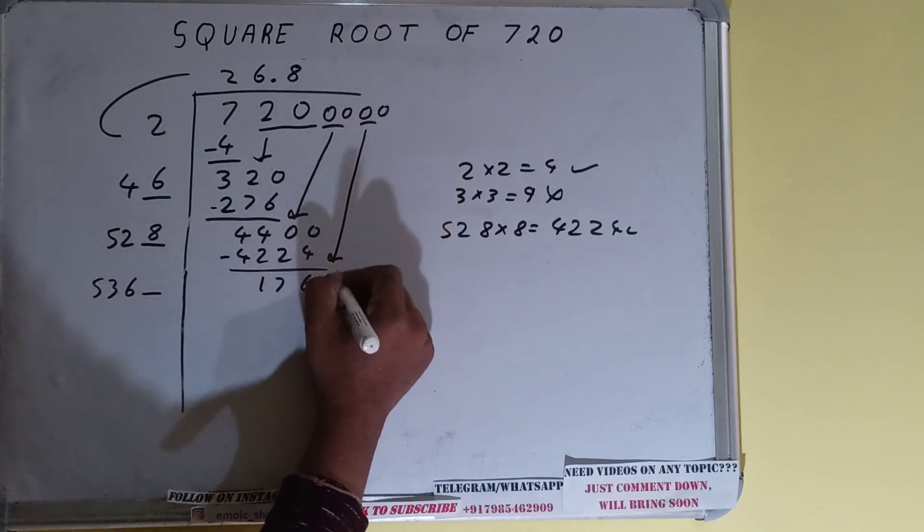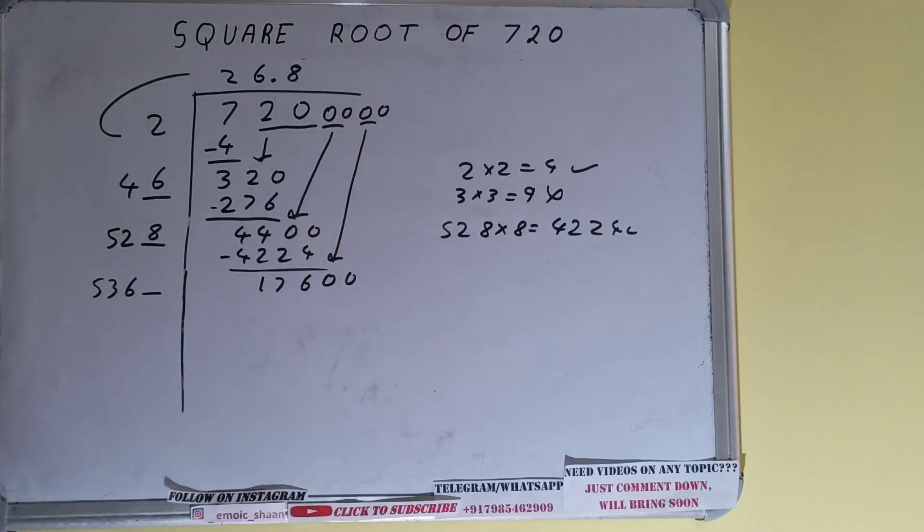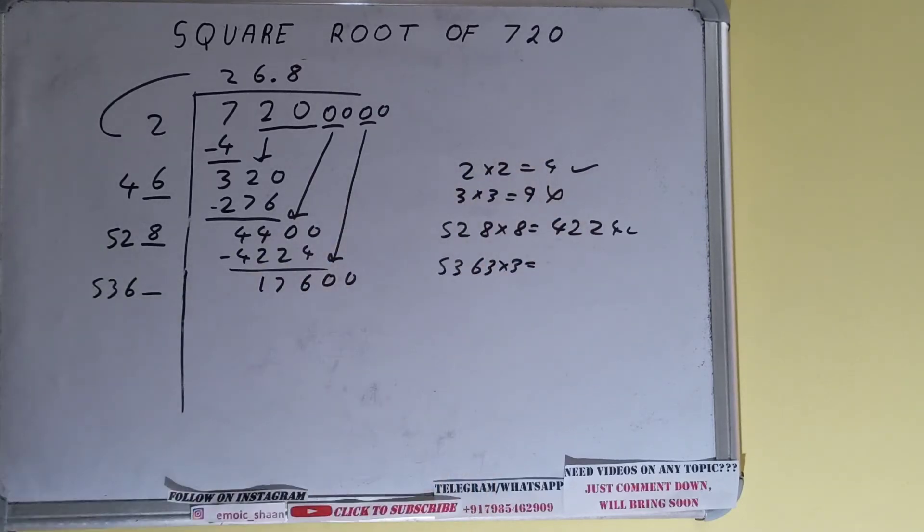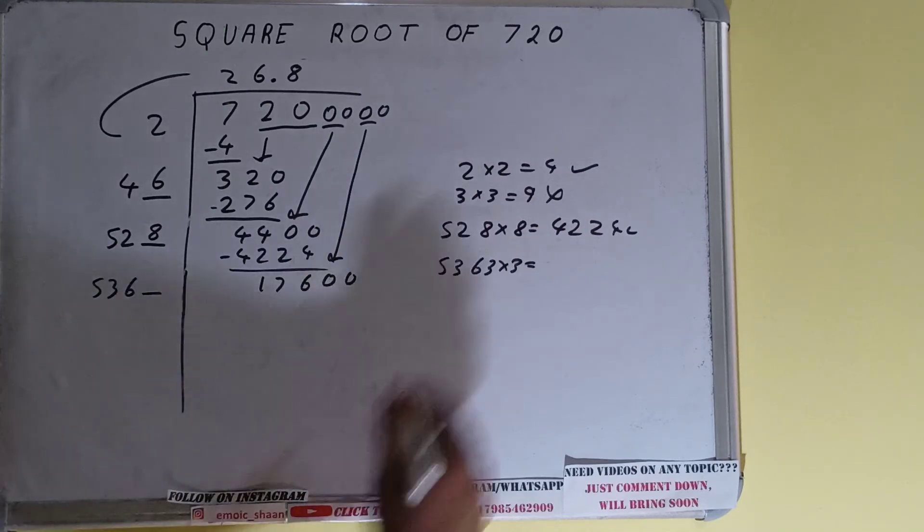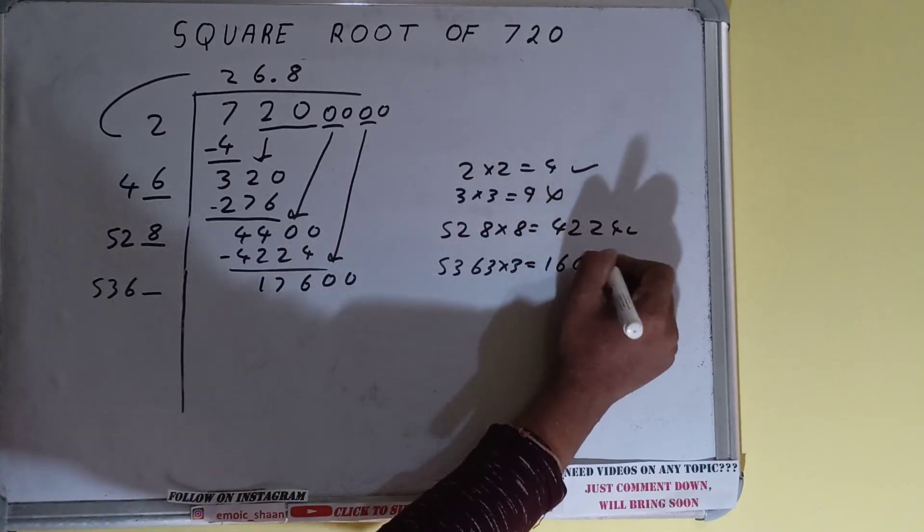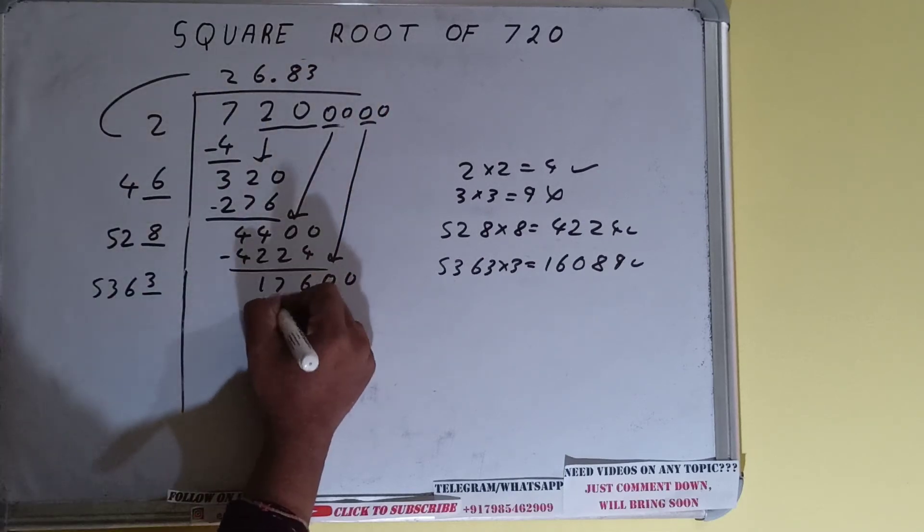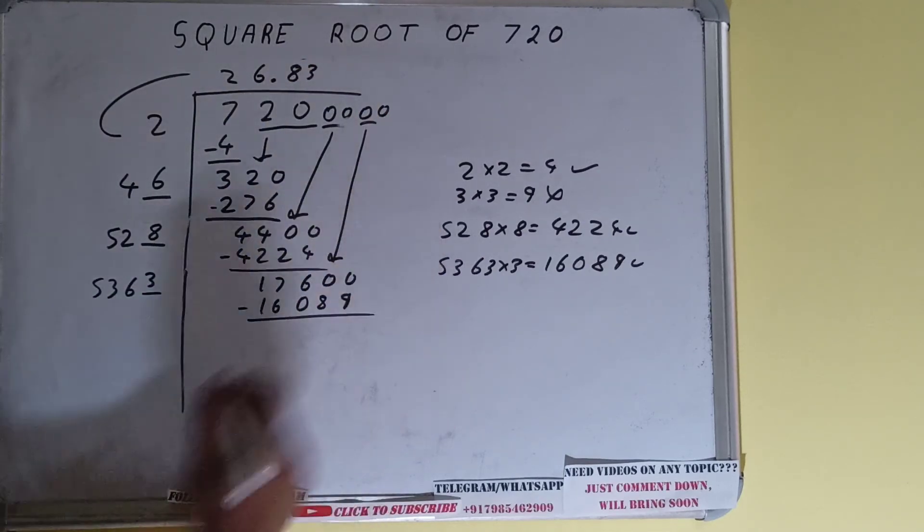Now we can try 3 times. 5363 into 3 we can try, it will be 16089, that is good to take. So 3 here and 3 here, 16089. Subtract it.